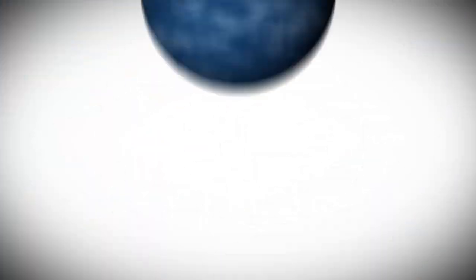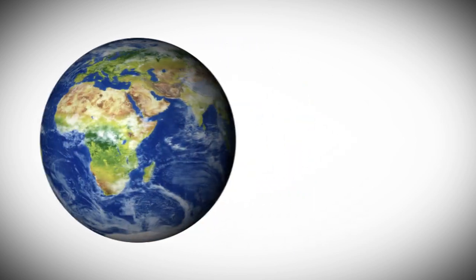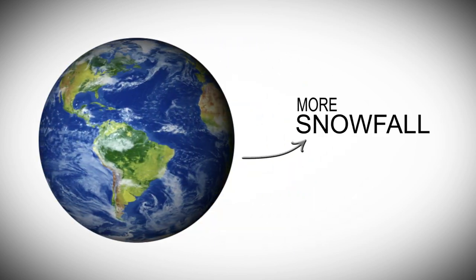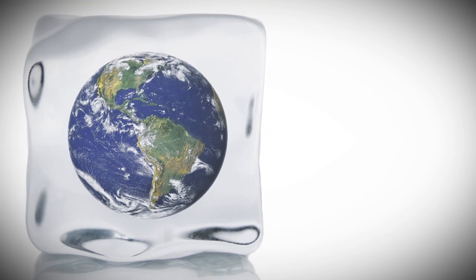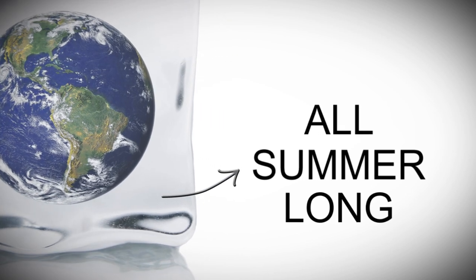Since water holds heat, even after it receded off the continents, those warmer oceans would have led to more snowfall. And that's how we can explain the way the ice age began. But for it to continue, the snow would have needed to stay frozen all summer long.